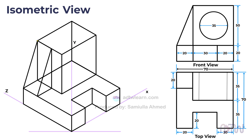This is how the shape should look in the isometric view. Lastly, we need to draw the circular hole on the isometric view. But before that, we need to remove all the non-visible lines from the isometric view to make it easier to understand.